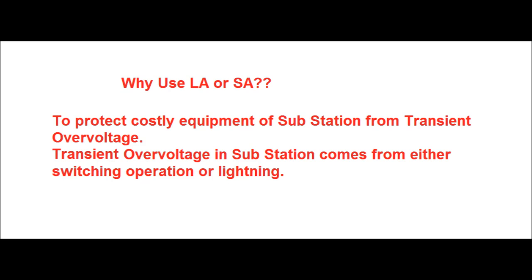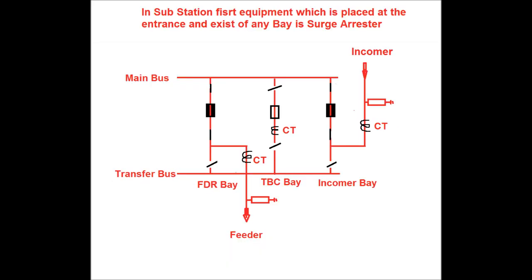Lightning arrester or surge arrester in a substation is used to protect costly equipment from transient overvoltage. This transient overvoltage comes either from switching operations or from a direct stroke of lightning. In a substation, the first equipment placed at the entrance and exit of any bay is the surge arrester. A single line diagram with one incomer, one outgoing feeder with a bus coupler bay, one main bus, and one transfer bus has been shown.